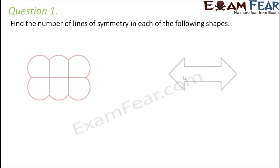Question number one: find the number of lines of symmetry in each of the following shapes. Let's look at the first shape. What lines can divide this into equal halves? The horizontal line can divide it into two equal halves — this half and that half are exactly identical and also mirror images of each other because they are laterally inverted. When you try to overlap them, they would completely cover each other. So this is a line of symmetry.